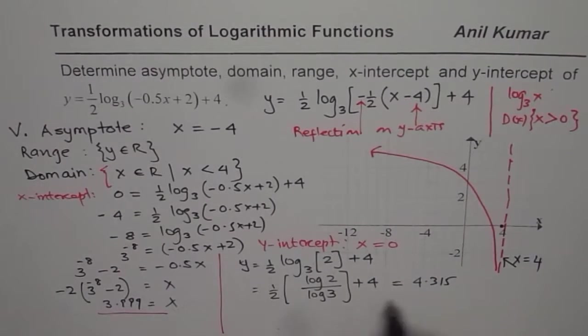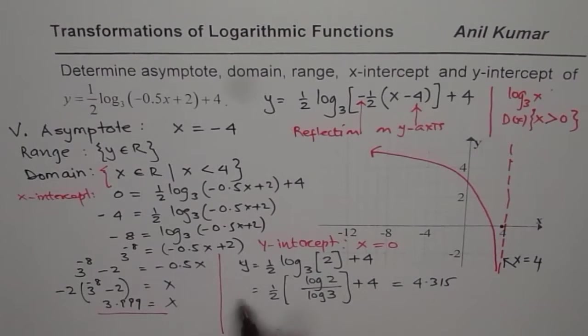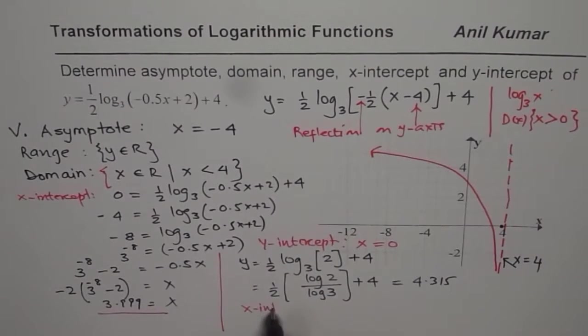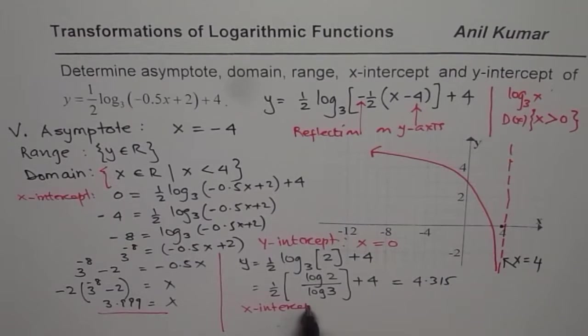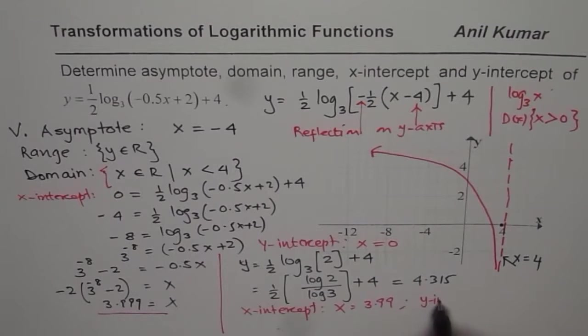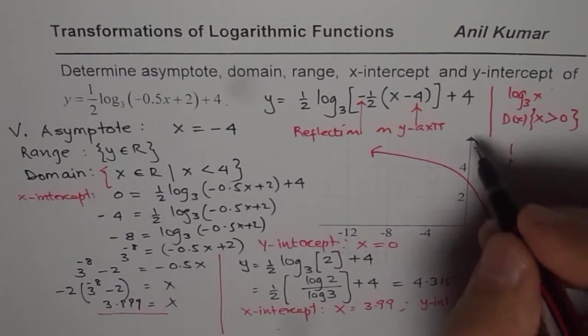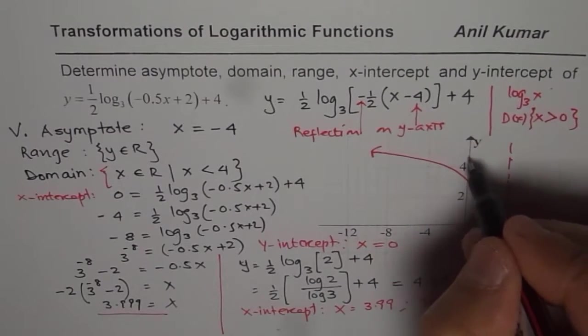We have y-intercept as 4.315. So let us write down our answer. We have x-intercept at x equals 3.99 and y-intercept at 0, 4.315. Y-intercept is more than 4, so kind of here, x-intercept is here.